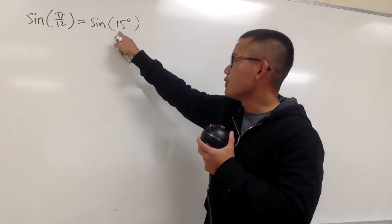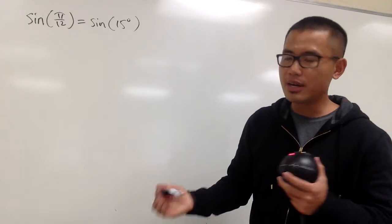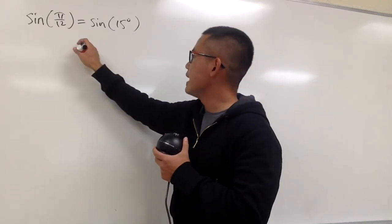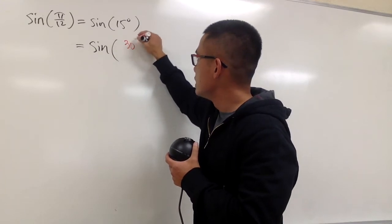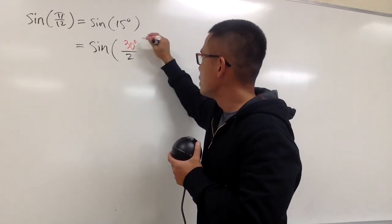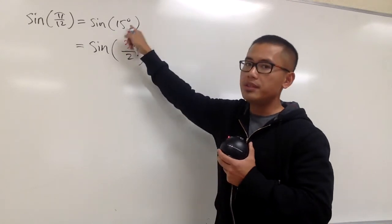But in this case, we don't know 15 degrees too well, but we do know 30 degrees much better. And we can write this as sine of 30 degrees over 2, because 30 degrees over 2 will be 15 degrees.